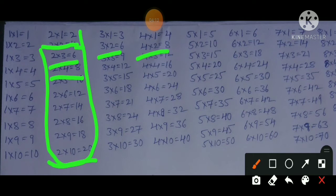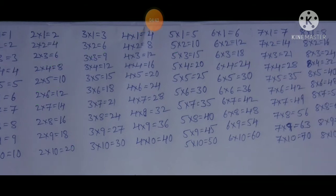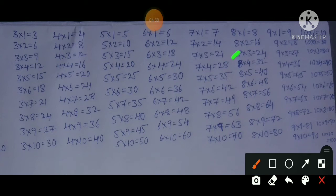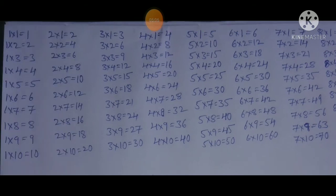Continuing the 2 times table: 2×4=8 and 4×2=8; 2×5=10 and 5×2=10; 2×6=12 and 6×2=12; 2×7=14 and 7×2=14; 2×8=16 and 8×2=16; 2×9=18 and 9×2=18; 2×10=20 and 10×2=20. Next, coming to the 3 times table.